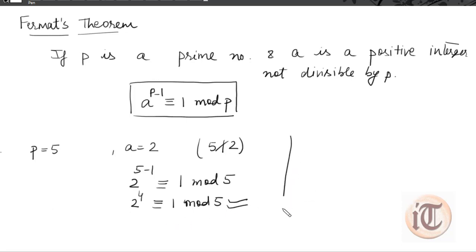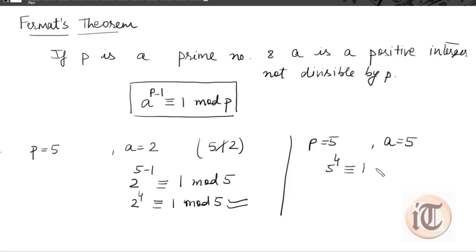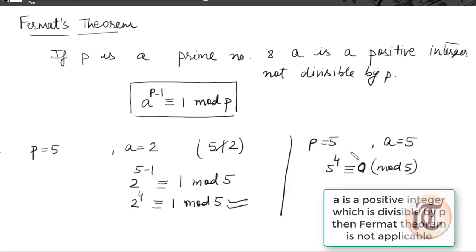But in the case when p equals 5 and a equals 5, this a is divisible by 5. We check whether the theorem applies. According to Fermat's theorem, 5 to the power 4 should be congruent to 1 mod 5, but this is not possible because 5 to the power 4 is divisible by 5, giving a remainder of 0. So if a is divisible by p, the Fermat theorem does not apply.